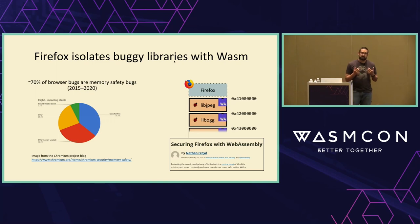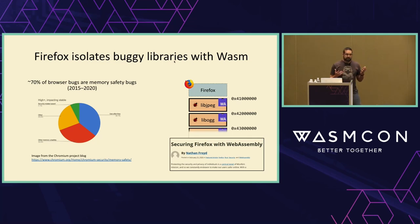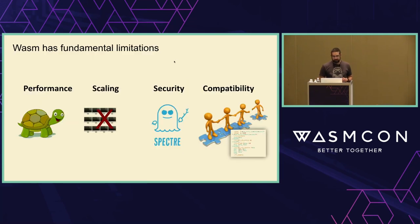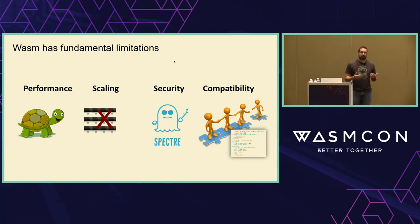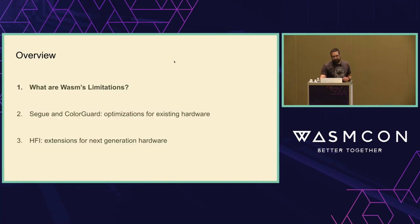People have tried to sandbox stuff with processes for the last two decades, and it really doesn't work out. Interprocess communication is so expensive that you have to refactor your whole application, so most people just don't do it. Things like OpenSSH or browsers' use of processes are really the exception rather than the norm. Unfortunately, Wasm has these fundamental limitations in terms of performance, scaling, security, and compatibility. My background is in virtualization — when I started working on virtual machines, the overhead was 30%. So when I see 20% for Wasm, I think: wait five years, it'll be okay.